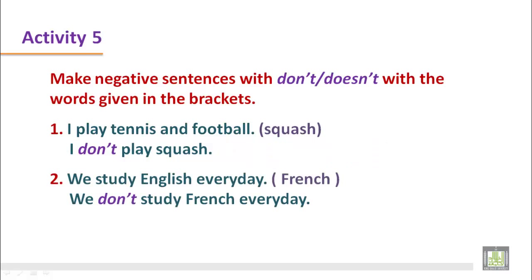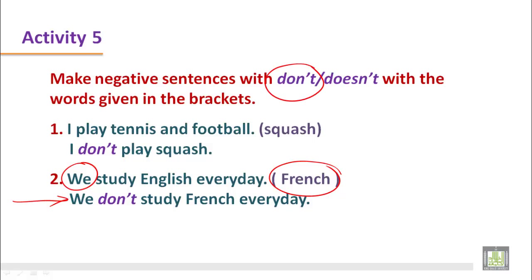Sentence number 2: 'We study English every day' — the word in the bracket is French. The subject is we, so we use do not. When making negative with first person, second person, or third person plural number, we use do not. 'We don't study French every day.' Don't is the contraction of do not.